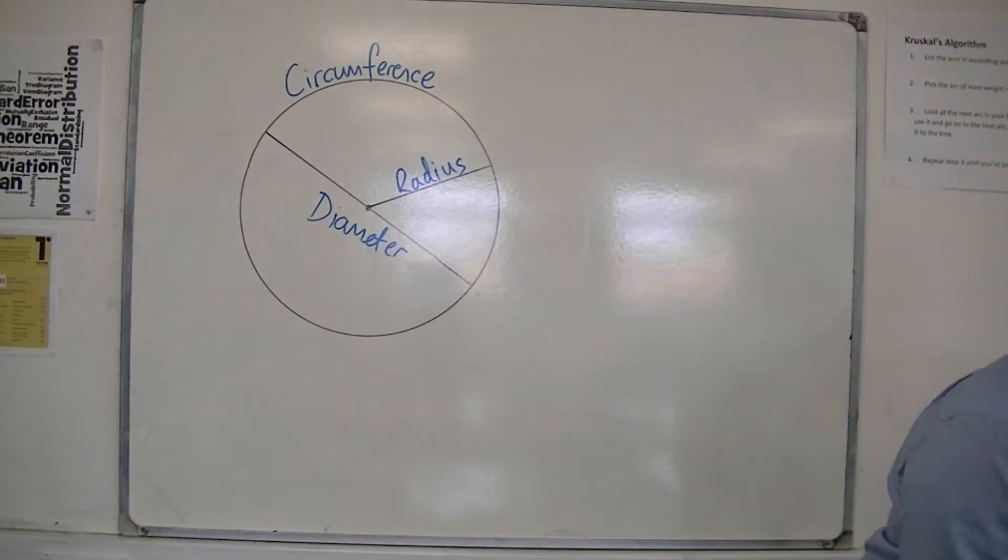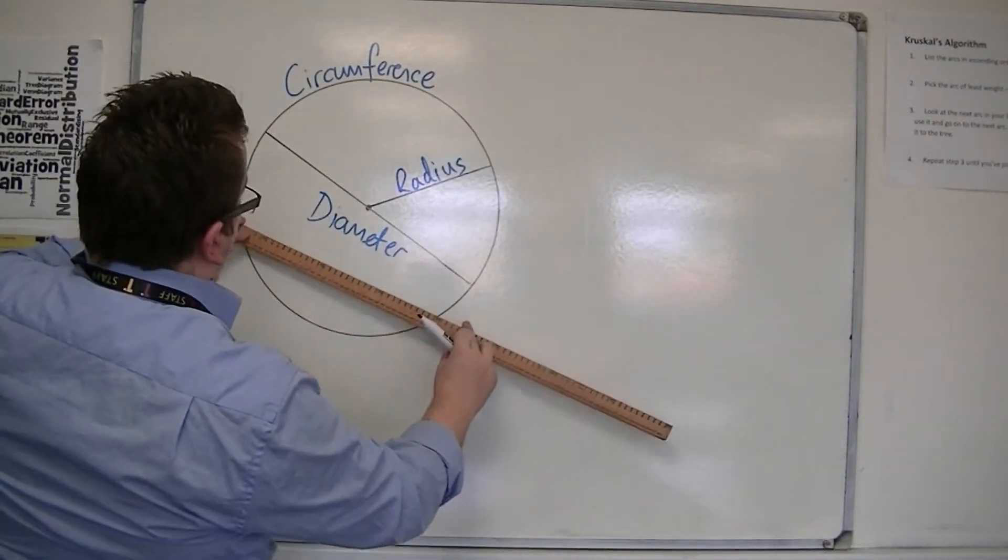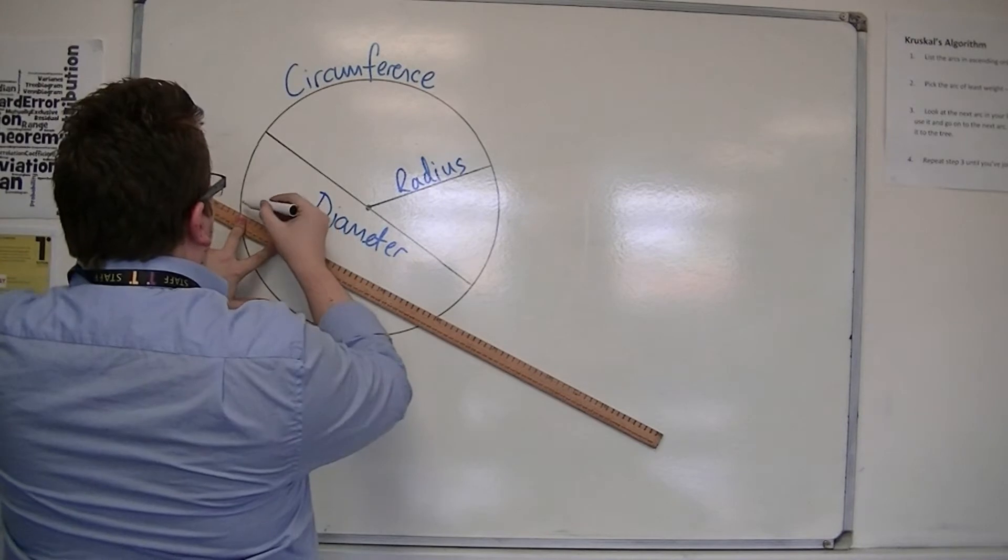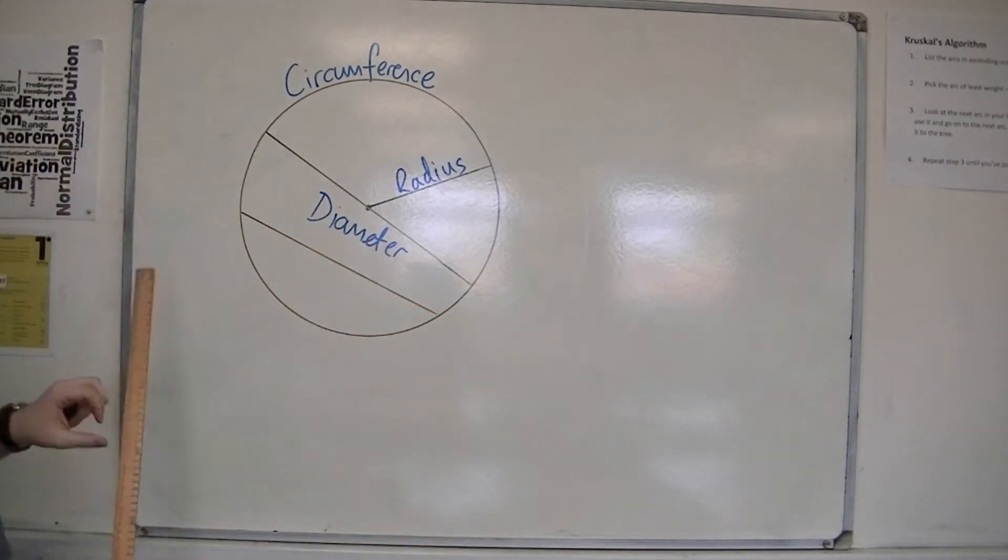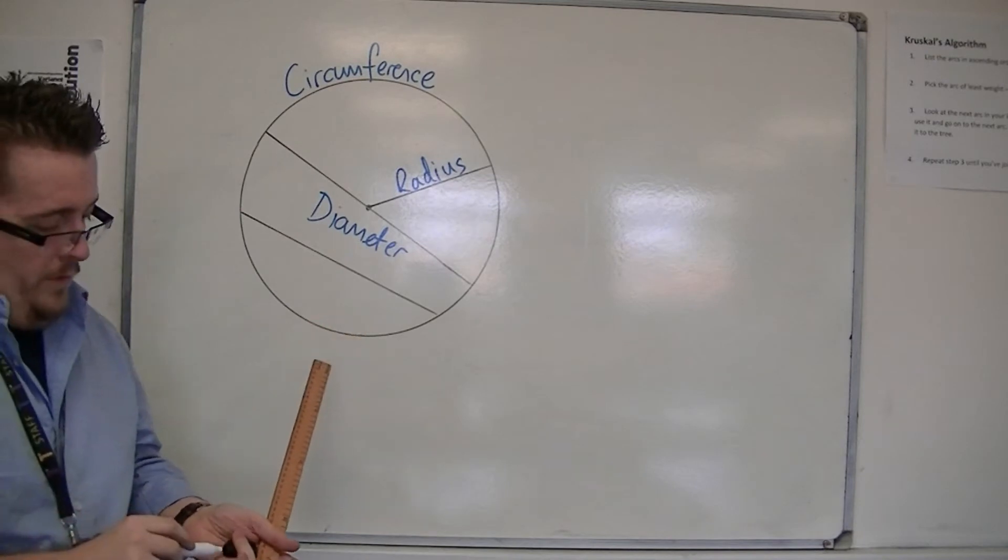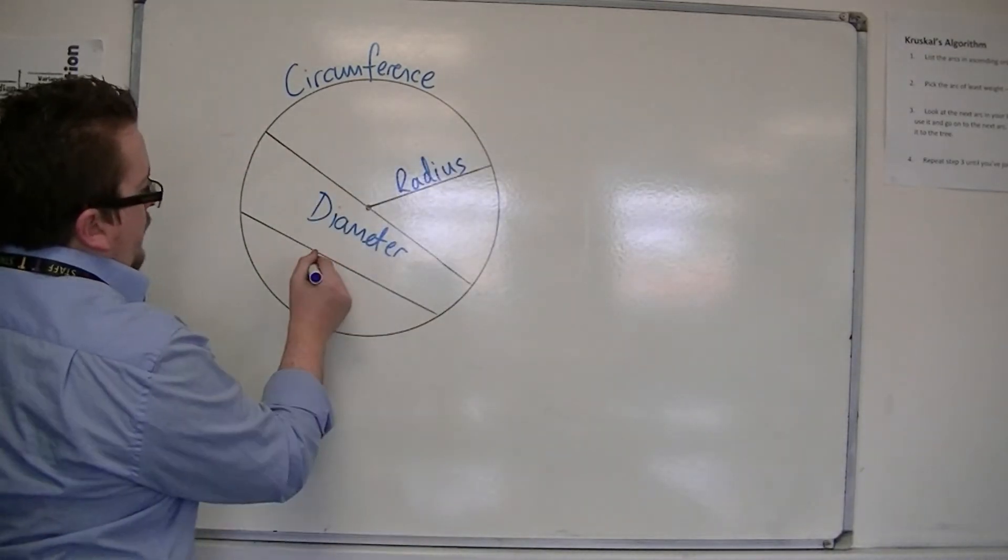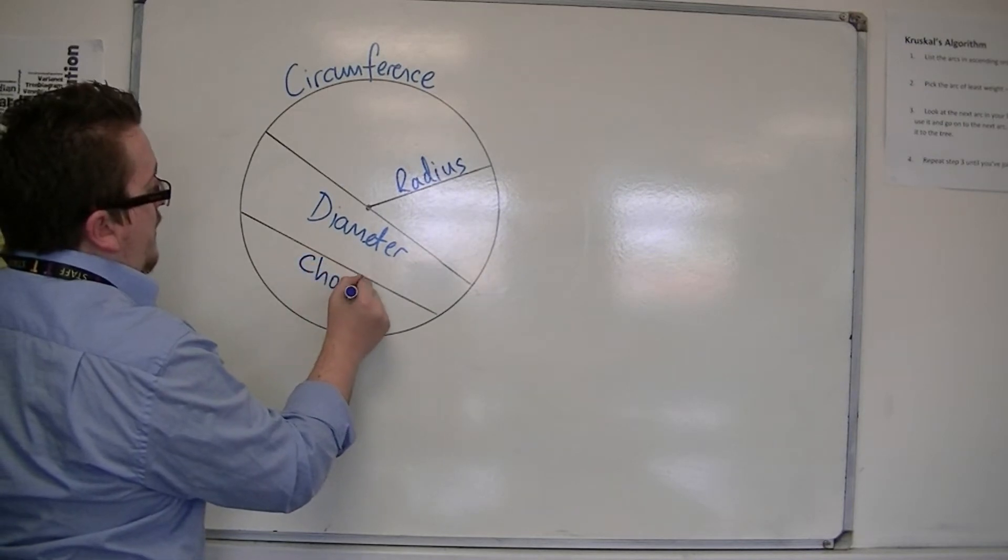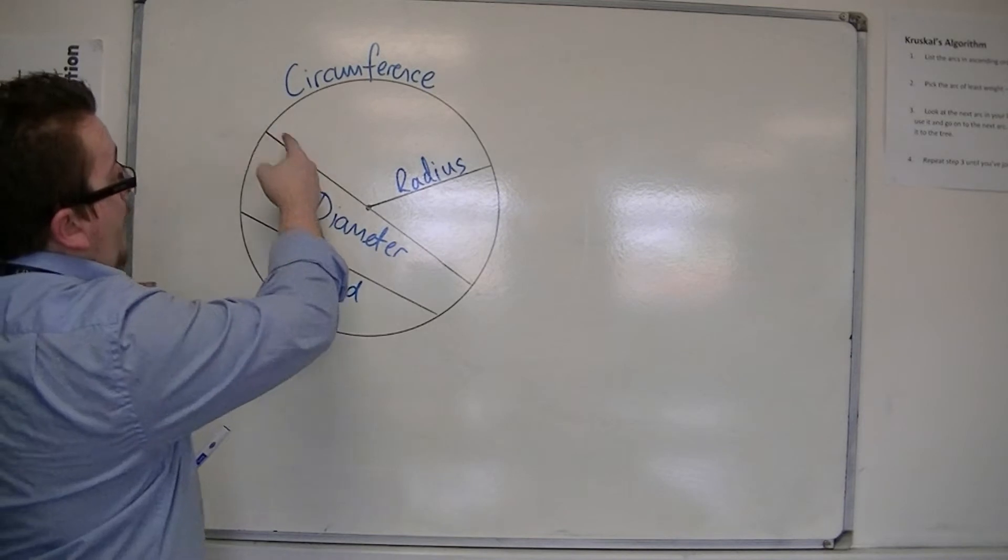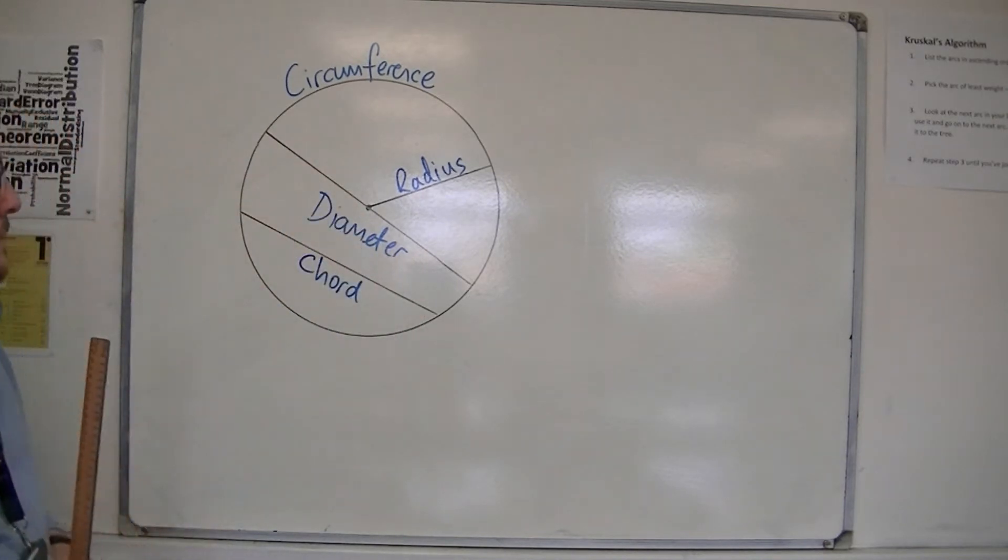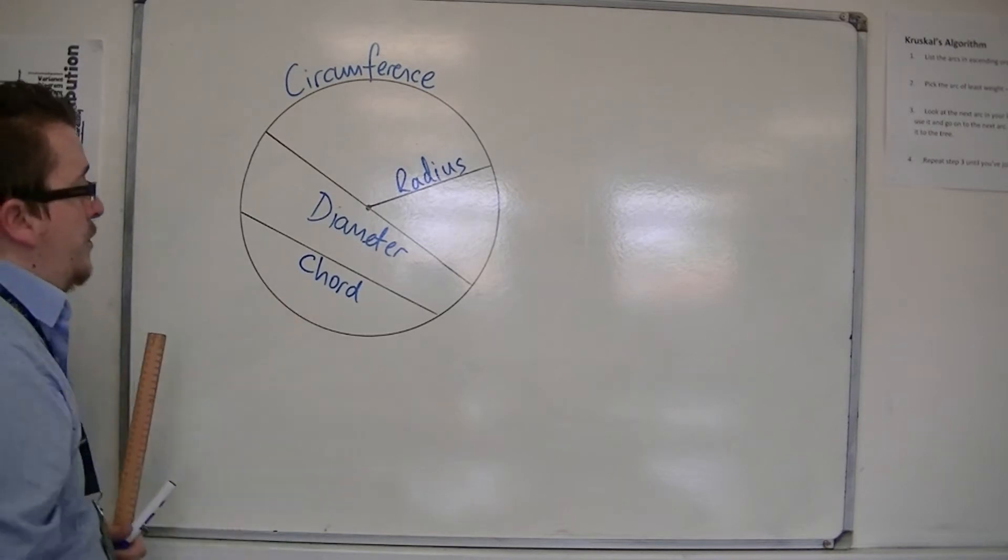So another one just goes from one part of the circle to another, but doesn't go through the centre. So this one is known as a chord. So you could say that the diameter is a special type of chord. It's a type of chord that goes through the centre of the circle. So any other line that doesn't go through the centre is called a chord.